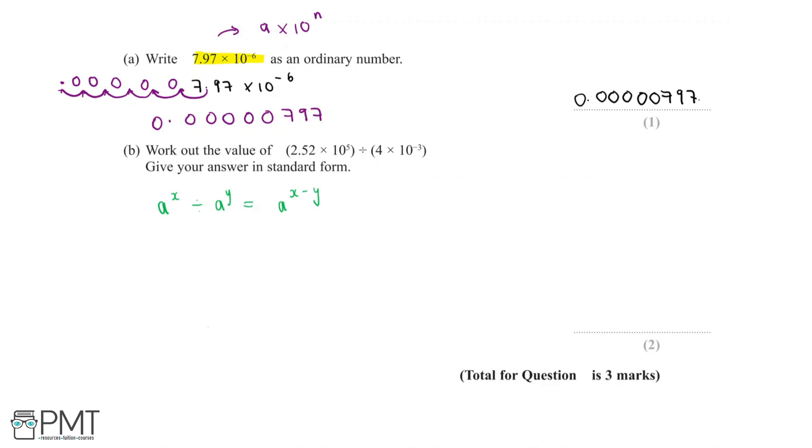In this case it is, because we have 10^5 and 10^-3. We can start by doing 2.52 ÷ 4, ignoring the standard form for now. 2.52 ÷ 4 is the same as halving this and halving it again. Half of 2.52 equals 1.26, then divide by 2 again to get 0.63.